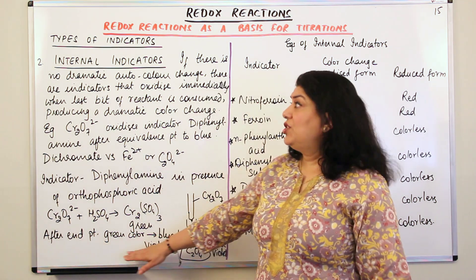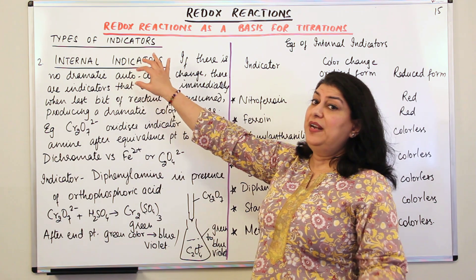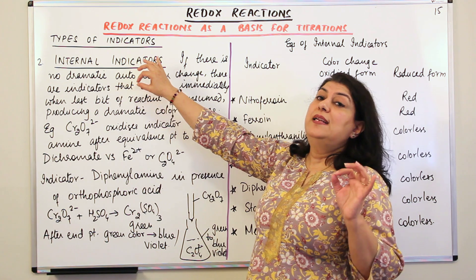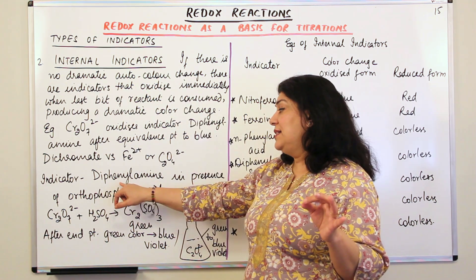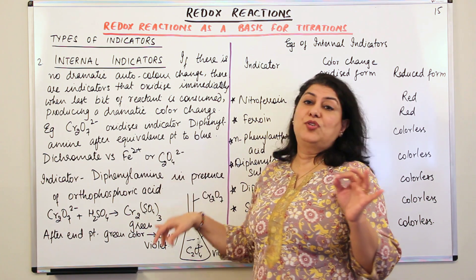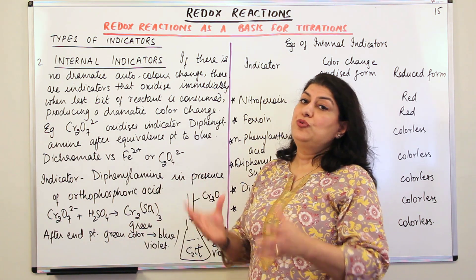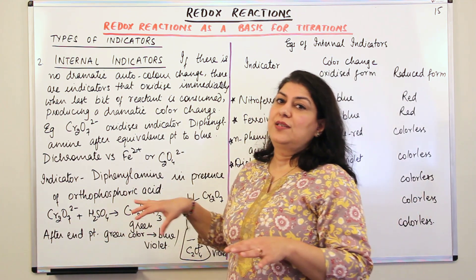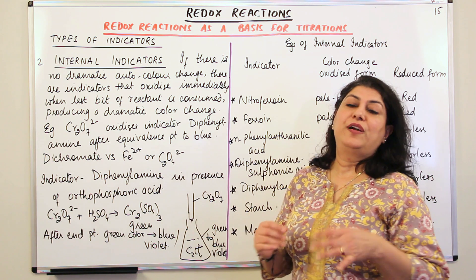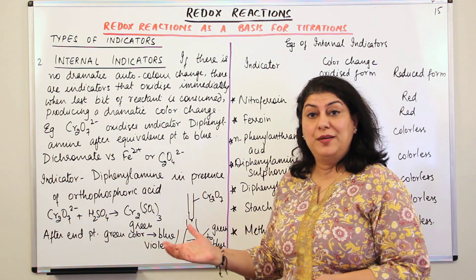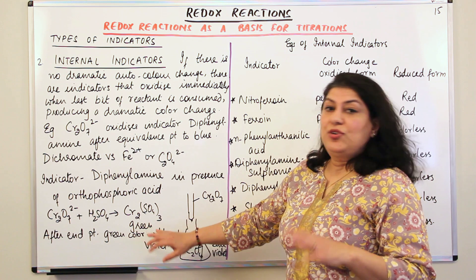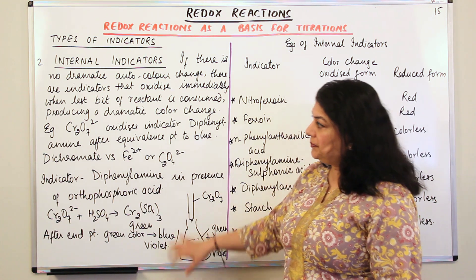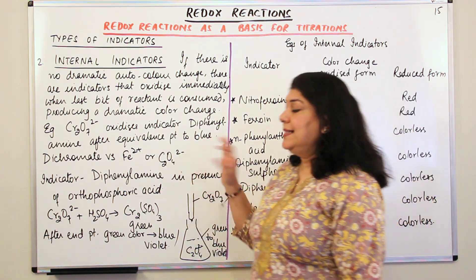So what kind of indicator was used? This was an internal indicator — specifically diphenylamine in the presence of orthophosphoric acid. From there, you use the stoichiometry of the reaction and apply the mole concept to carry out the calculations: knowing the concentration of one solution, you can find the concentration of the other. The rest is stoichiometry and calculation. So that was internal indicators.